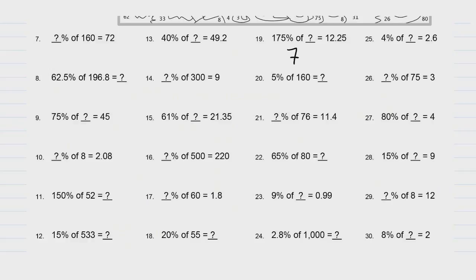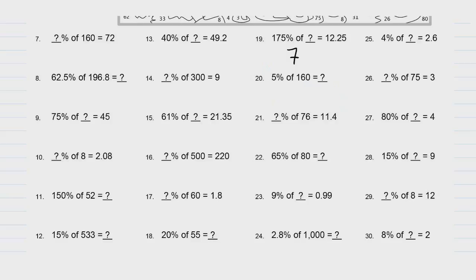Problem number 20: 5% of 160. We already know that 10% of 160 — just move the decimal one space — is 16. Well, 5% is half of 10%, so all we do is divide 16 by 2, and 16 divided by 2 is 8. 5% of 160 is 8. The answer is 8.